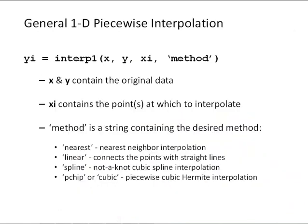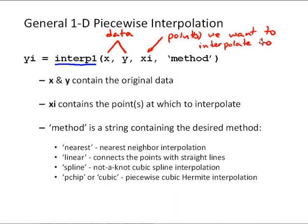So MATLAB has another function for general one-dimensional piecewise interpolation, and that's called the interp1 function. And the way that works is still the same basic approach where the first two inputs x and y are our given data that we're using for the interpolation. xi, the third input, that's the points or point we want to interpolate to. And then method is a third input that just defines what type of interpolation we're going to do, and there's four options for the method.